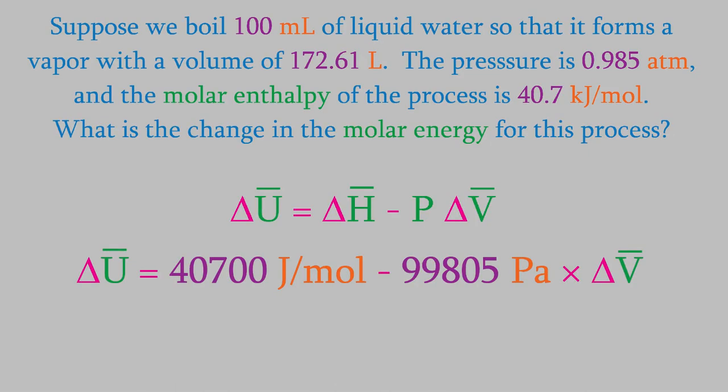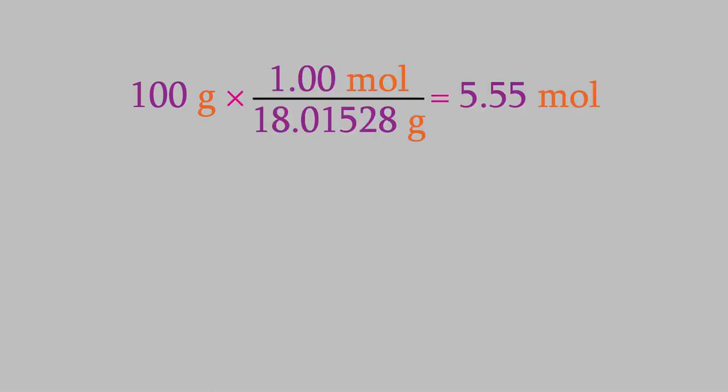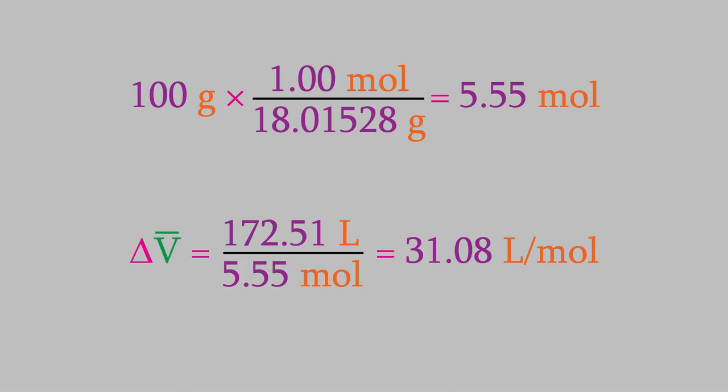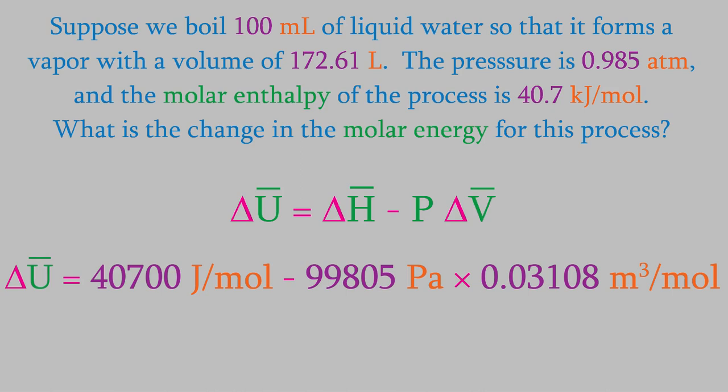What about the change in molar volume? That one's a little trickier. We know the volume at the beginning and at the end, and we can see that the change in volume is 172.51 liters. But how many moles are there? To find out, we just need to remember that liquid water has a density of about 1.00 grams per milliliter. We had 100 milliliters, so that's 100 grams. And, using the periodic table, we can convert that to moles. When we do, we find out that we have 5.55 moles of water. That gives us a delta V bar of 31.08 liters per mole. To make the units work out, we'll convert that to meters cubed per mole, which gives us 0.03108 meters cubed per mole.